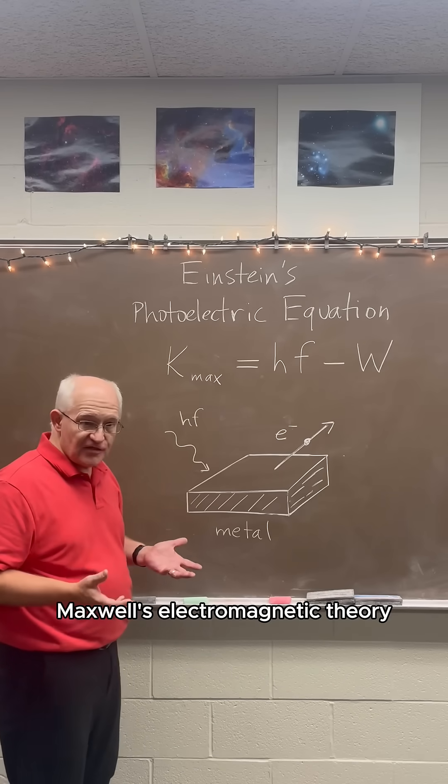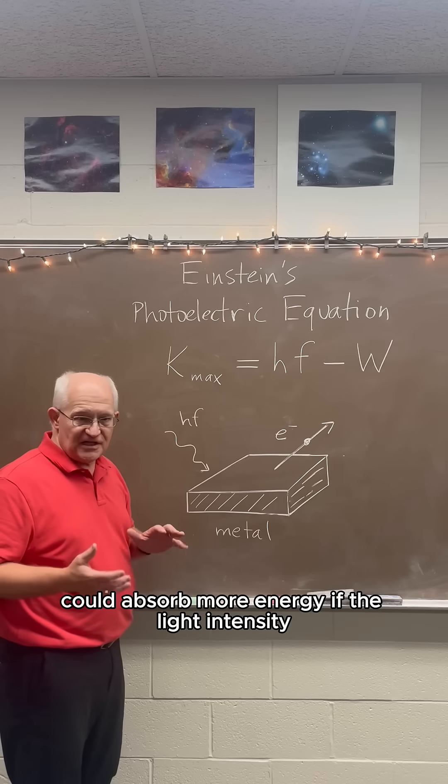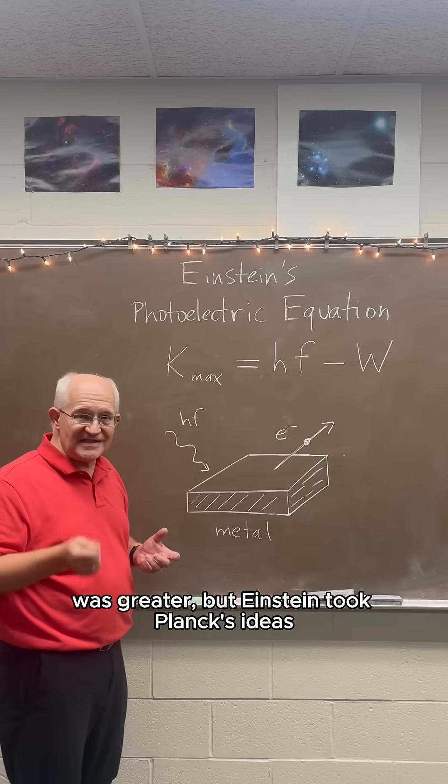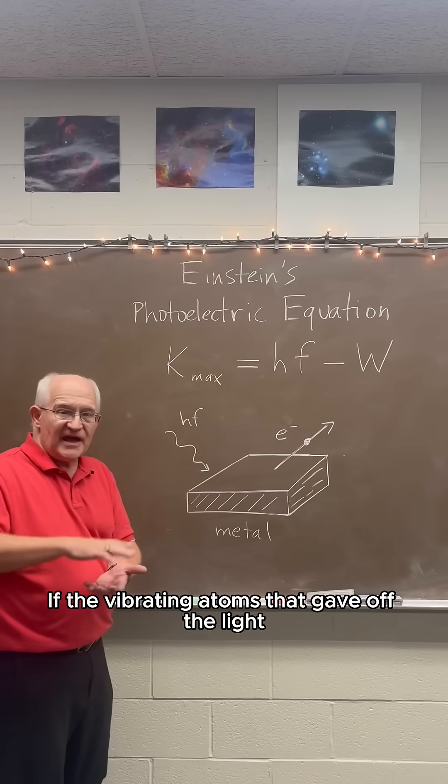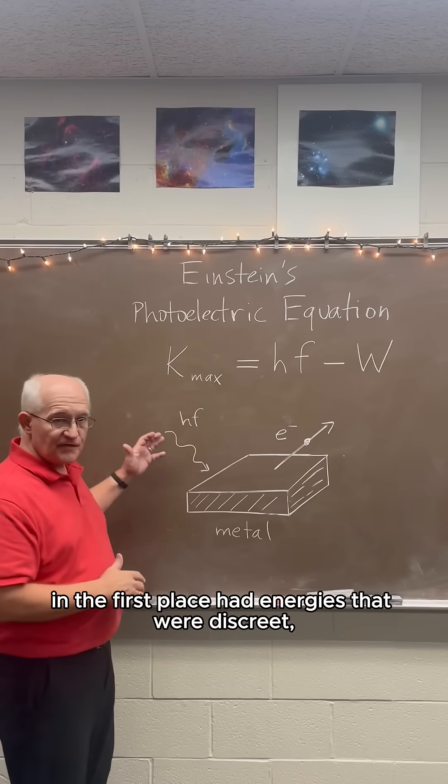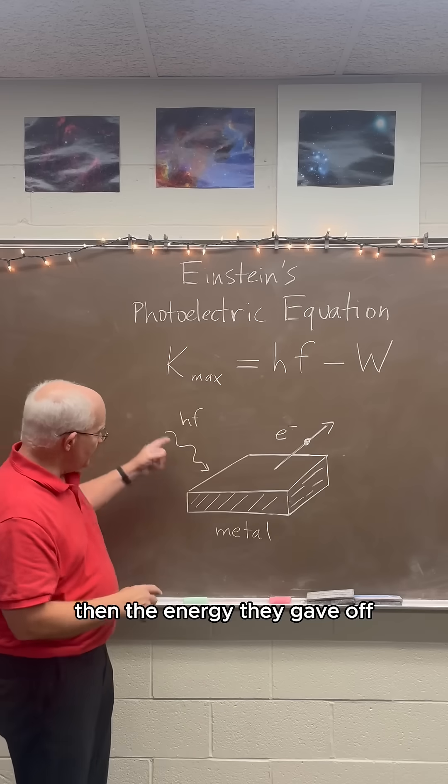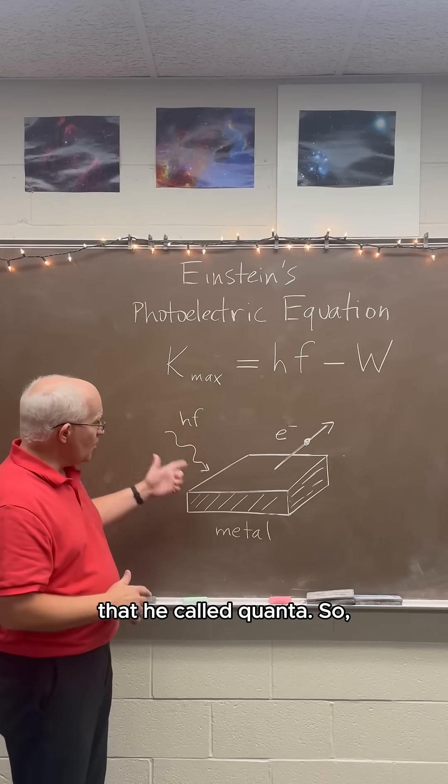Maxwell's electromagnetic theory would have predicted that electrons could absorb more energy if the light intensity was greater. But Einstein took Planck's ideas of energy quantization seriously. If the vibrating atoms that gave off the light had energies that were discrete, then the energy they gave off should be given off in discrete units that he called quanta.